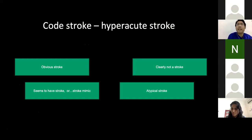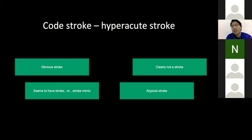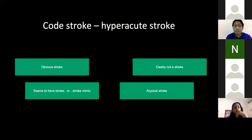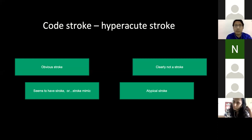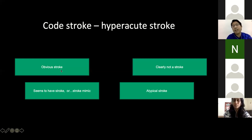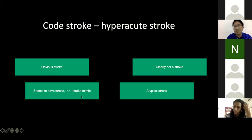In 1995, the NINDS study changed stroke treatment by approving intravenous thrombolysis with tPA. In the hyperacute setting, activation is called 'code stroke' or 'stroke alert.' Some centers have different codes based on time of onset, but ultimately stroke is an emergency. You can have obvious stroke, clearly not a stroke, stroke mimic, or stroke chameleon — the atypical stroke presentation we are discussing today.